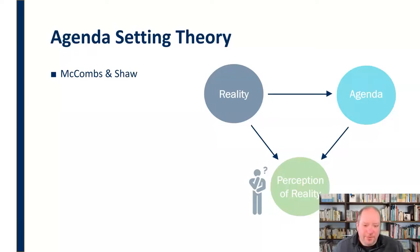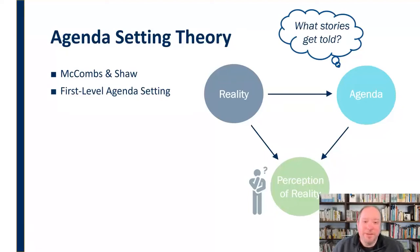McCombs and Shaw said there are basically two levels of agenda setting. The first level of agenda setting says the media determines what stories get told in the first place. What stories make it on the news and which ones don't? It's highly cultivated and controlled by the organization or individual making that decision. What stories get told and which ones get left out? That's important to our perception of reality.